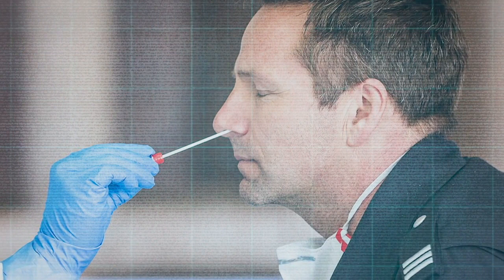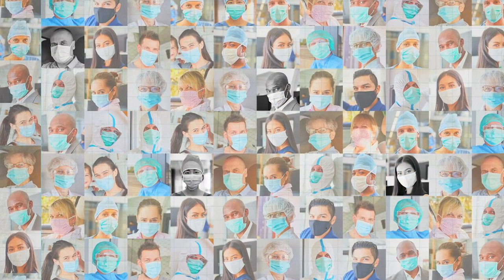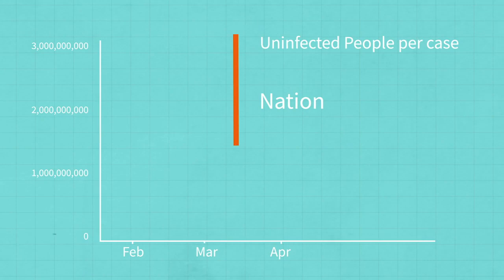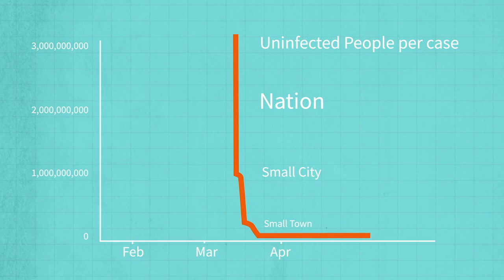One thing we can do instead of plotting the number of infected people in the community is to plot the number of uninfected people for each infected person — in other words, how big is the community of healthy people available to care for each infected person? Early in the game, you've got one infected person and a whole nation to take care of them. A few days later, each infected person has essentially a small city available to take care of them. A few days more, it's down to a small town. When you plot it that way, it's a lot easier to see how the situation is going to blow up and deteriorate quickly.